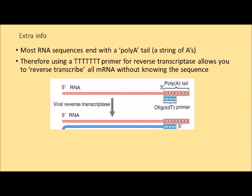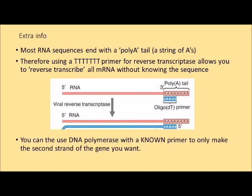So how does reverse transcriptase work? Most RNA sequences have a string of adenine bases at the end, and you can use a string of thymine bases as your primer. That will then reverse transcribe all of the RNA in the sample. When you use DNA polymerase, you use a primer at the other end of your known sequence, and that will specifically amplify the RNA of the gene that you're interested in.